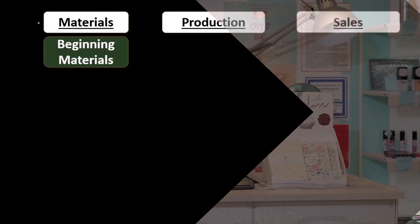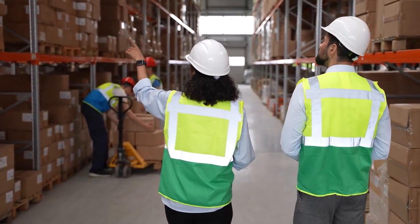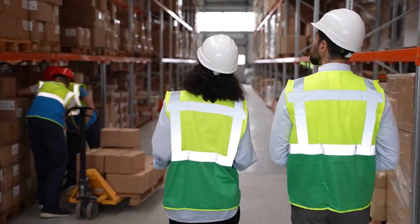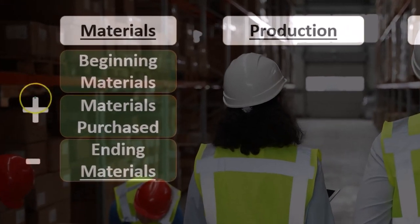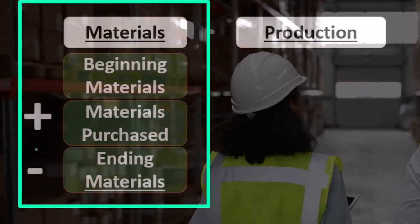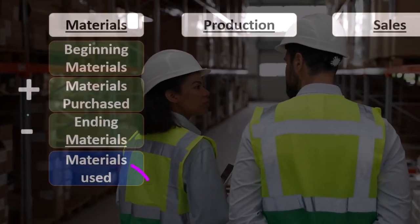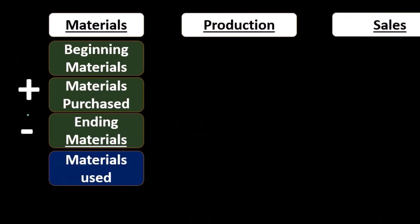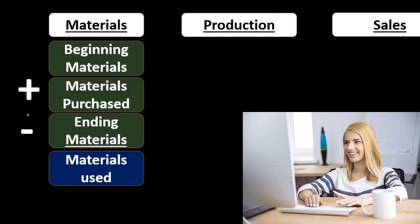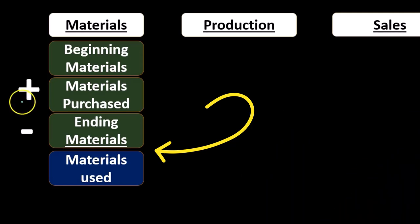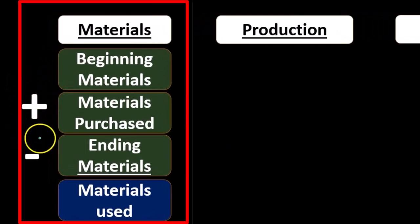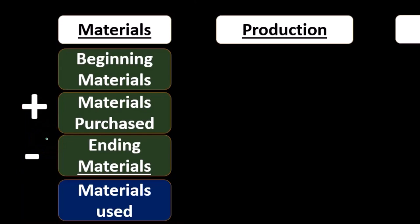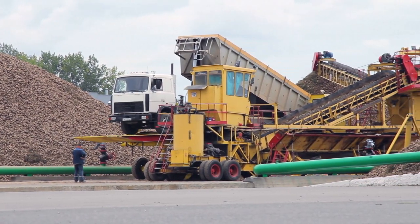First, the materials run through a similar process as when we just buy and sell inventory from a merchandising company. We start with the materials already in the warehouse — beginning materials — then we add the materials we purchase, giving us materials available for use. We then subtract the ending materials — what's still there after counting — and that gives us the materials used.